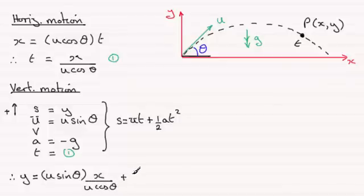Then we've got plus a half times the acceleration, which is minus g, times t squared again, which is this value here. If we square that, we get x squared then all divided by u squared cosine squared theta.